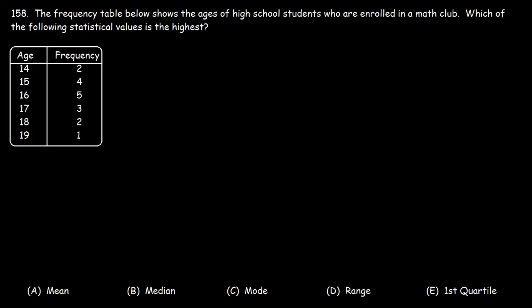Number 158. The frequency table below shows the ages of high school students who are enrolled in a math club. Which of the following statistical values is the highest? Would you say it's A, the mean, B, the median, C, the mode, or would you say it's the range or the first quartile?